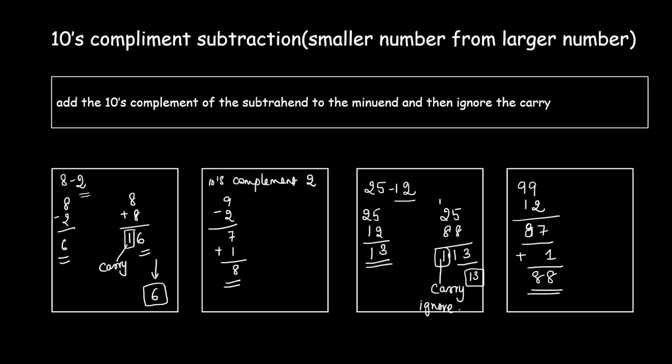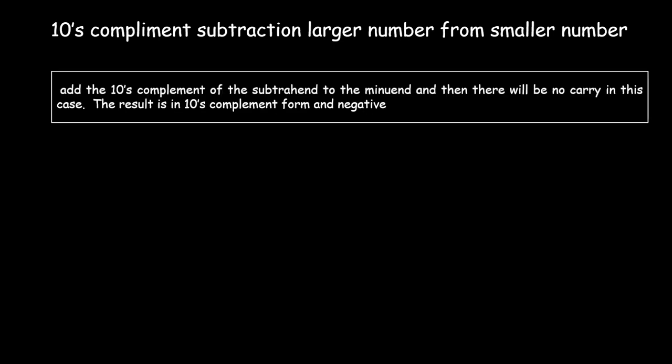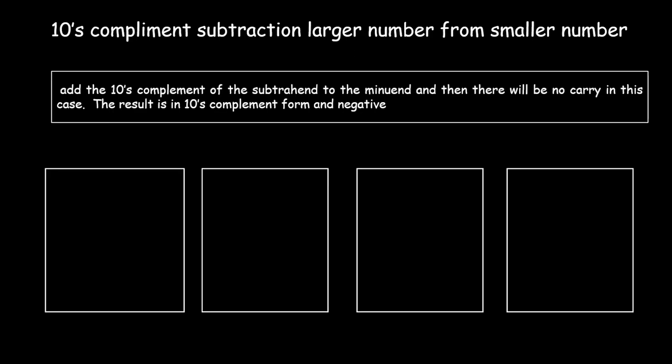When subtracting a smaller number from a larger number, you will always get a carry — ignore it. Now let's consider the other case: subtracting a larger number from a smaller number. In this case, there will be no carry, and the result will be in tens complement form. To get the actual result, find the tens complement of the result and negate it.